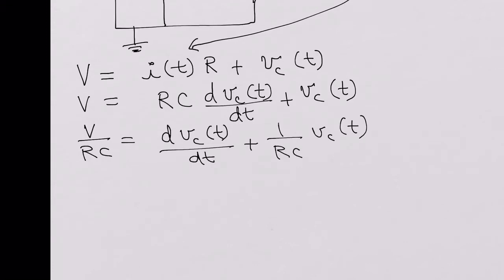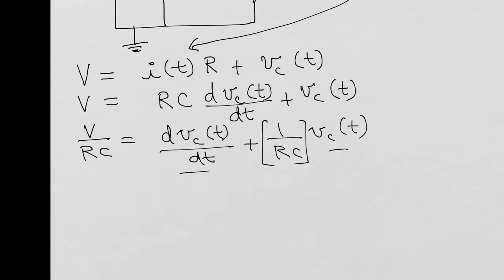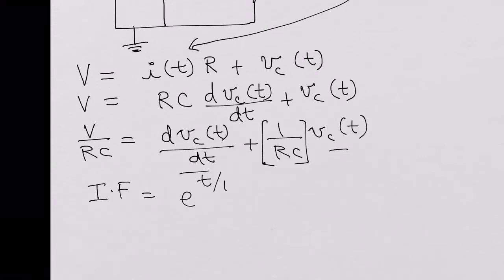To solve this kind of differential equation, where you have a derivative term and the actual term — the voltage across the capacitor, with dV_C(T)/dt and V_C(T) — we use something called an integrating factor. From mathematics textbooks, the integrating factor for this equation would be e^(T/RC).